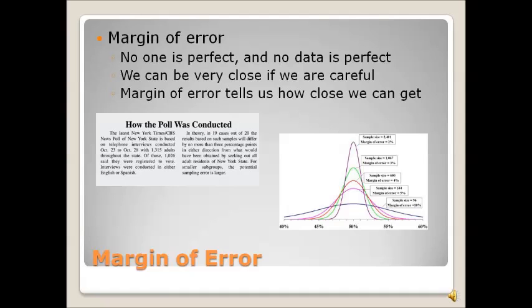So that means that if the poll reported 57% of people approved, then 19 out of 20 groups that you pick would have within 3% of that value. So it could be as high as 60%, it could be as low as 54%, but it will be within 3 percentage points. As you can see in the picture on the right, as you increase your sample size, your margin of error decreases.